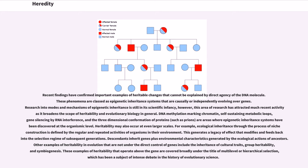DNA methylation marking chromatin, self-sustaining metabolic loops, gene silencing by RNA interference, and the three-dimensional conformation of proteins such as prions are areas where epigenetic inheritance systems have been discovered at the organismic level.